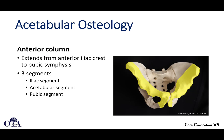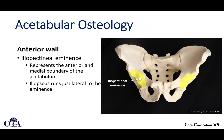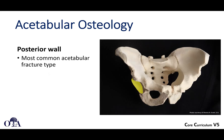The anterior column extends from the anterior iliac crest all the way down to the pubic symphysis. You have an iliac segment, an acetabular segment, and the pubic segment. The posterior column does not extend all the way up into the ilium — it's that super-acetabular bone extending from the greater sciatic notch down to the inferior ischium, as shown here on multiple views. The anterior wall includes the iliopectineal eminence. The posterior wall is, as you would expect, that area there. This is a very common type of acetabulum fracture.